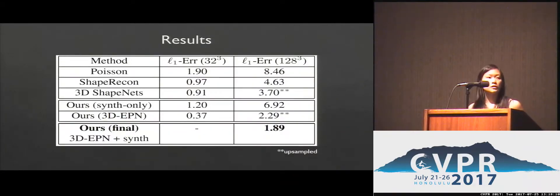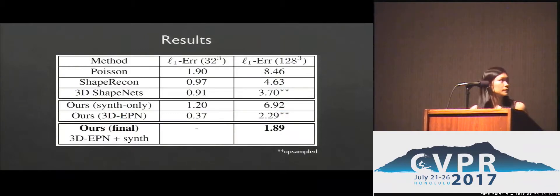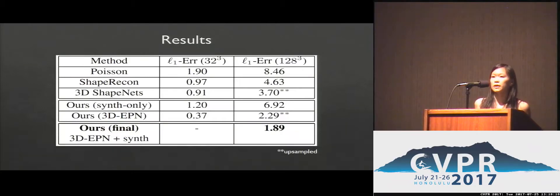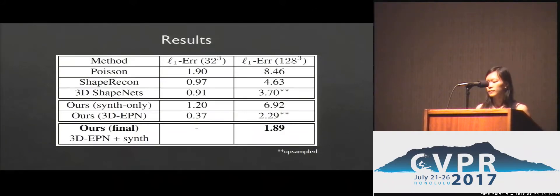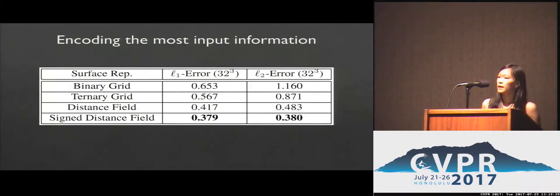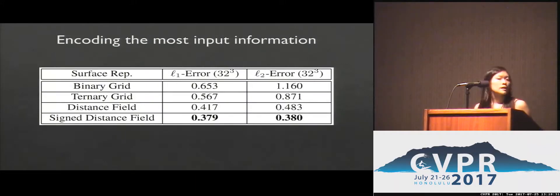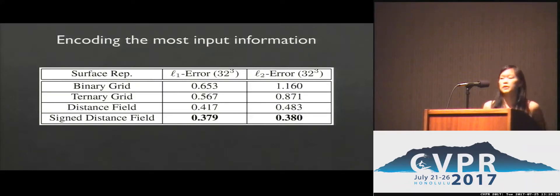We train our model on ShapeNet and compare against several other shape completion methods. Our 3D encoder predictor network, trained end-to-end for completion, as well as the shape synthesis, show significant improvement over previous state-of-the-art. We also evaluate the 3D surface representation. A signed distance field encodes the most information about the surface and unknown regions, providing the best results.